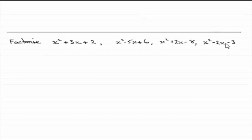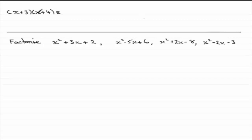I want to take you back to expanding a pair of brackets — something like this. Suppose we had x plus 3 being multiplied by x plus 4. In the usual way, you do x times each of the terms in the bracket, and then 3 times each of the terms. First, x times x gives you x squared. Then x times 4 gives you plus 4x.